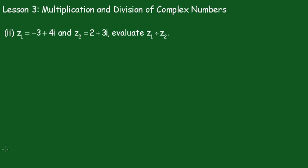Alright, now we're going to divide these two numbers, z1 and z2. And we'll do it this way, z1 divided by z2 is equal to minus 3 plus 4i over 2 plus 3i.